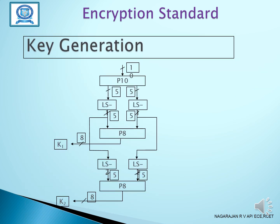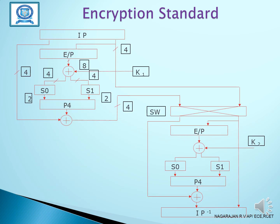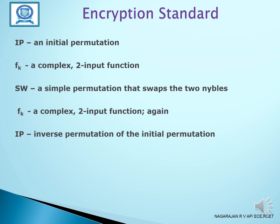For key generation, we use an 8-bit key generation process that produces two keys: K1 and K2. This is the encryption standard of SDES. IP is the initial permutation; FK is a complex two-input function; SW is a simple permutation that swaps the two halves; and IP inverse is the inverse permutation of the initial permutation.